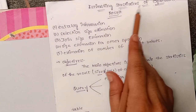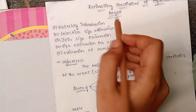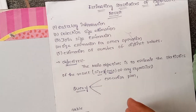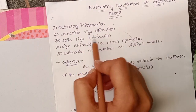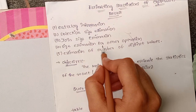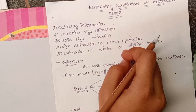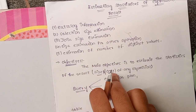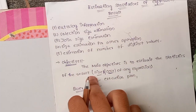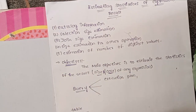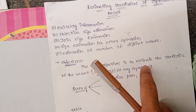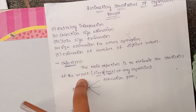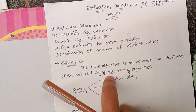Today we discuss estimating statistics of expression results. For this, there are five types: catalog information, selection size estimation, join size estimation, size estimation for other operations, and estimation of number of distinct values. The main objective is to estimate the statistic — size, result size, or cost — of any expression. A query is converted into a relational expression, and that expression is estimated in statistical form based on size or cost.